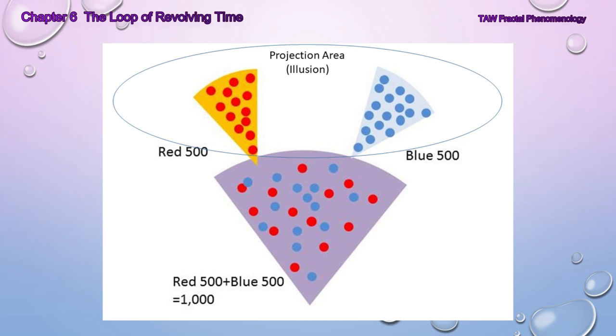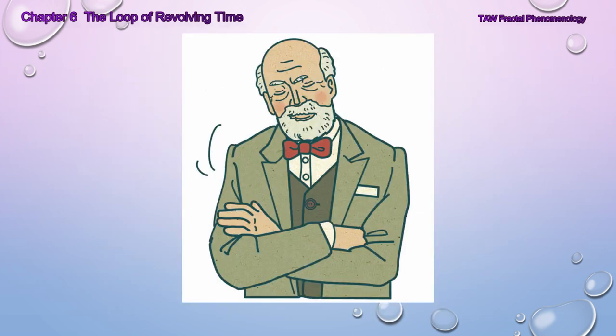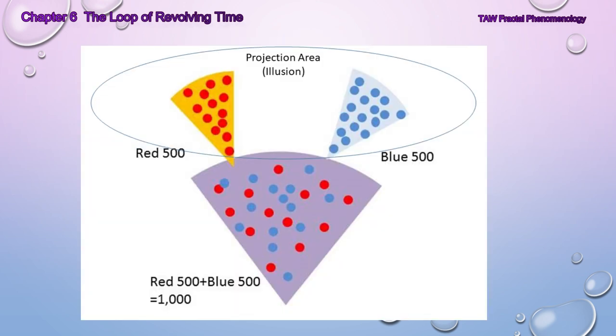However, in the outside world, it is possible to only project the red color or likewise project only the blue color. One cannot project outwards what is not within. However, so long as one considers the purple and the blue and the red to be different, then one cannot understand that what is projected outwards is the same as what is within. One would not be able to understand that one's surroundings are shadows of oneself. Next, let's think about volume.